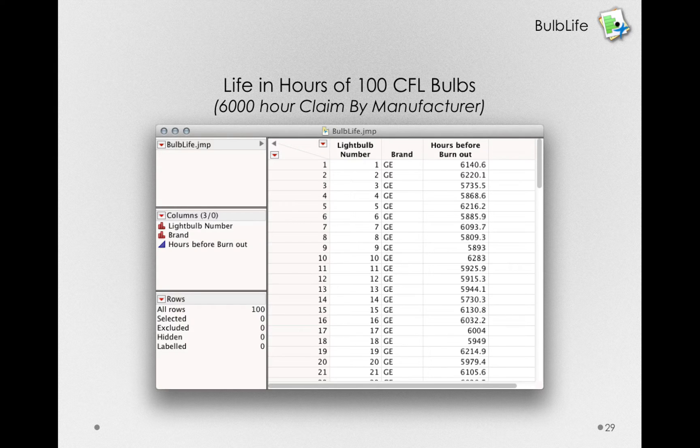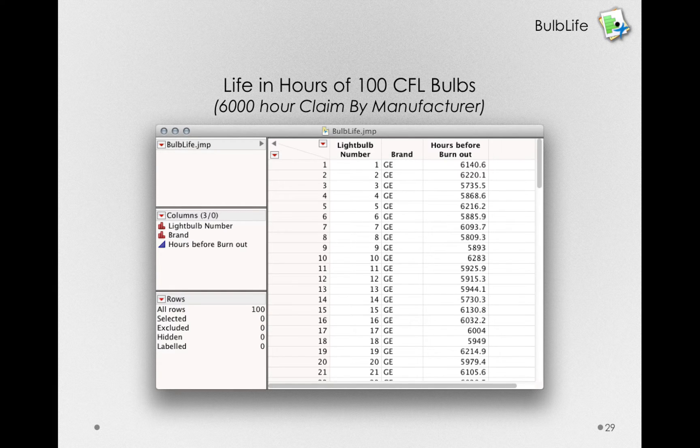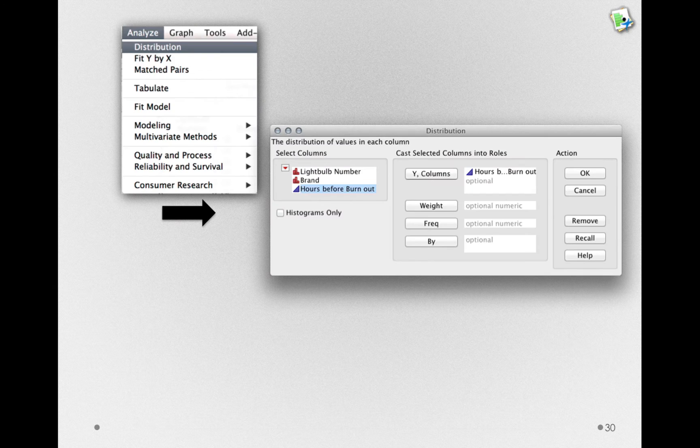That's what this dataset has, the number of hours each bulb ran before it burned out, and also the brand of bulb. We won't be using brand in this example, but we may come back to this later. In JUMP, to analyze these data, we'll do something very similar to when we used a z-test. That is, we'll go to the Analyze distribution platform and cast Hours Before Burnout as our Y column.